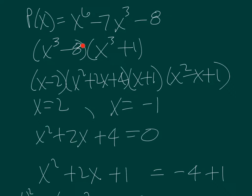x cubed minus eight is a difference of cubes, so it will factor into x minus two times x squared plus two x plus four. x cubed plus one is a sum of cubes, so it would factor into x plus one times x squared minus x plus one.